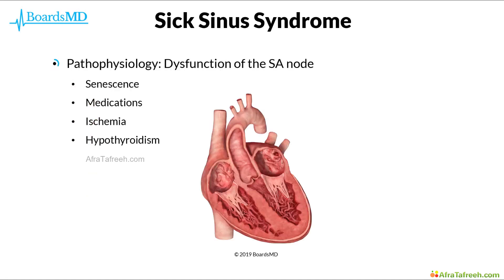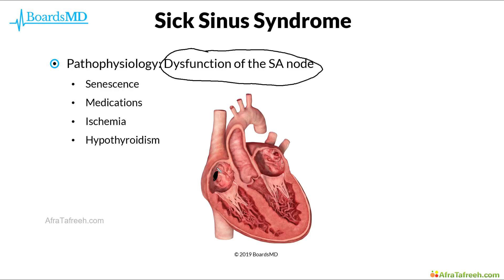In sick sinus syndrome, the pathophysiology is dysfunction of the sinoatrial or SA node. The sinoatrial node is located in the atria and serves as the pacemaker of the heart. However, especially as patients age and this becomes damaged and less functional over time, this can lead the sinoatrial node to not fire quickly enough, resulting in bradycardias, or it can fire too much, resulting in various tachycardias such as atrial fibrillation, atrial flutter, and PSVT.